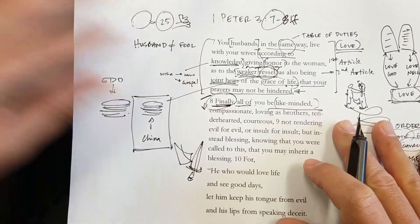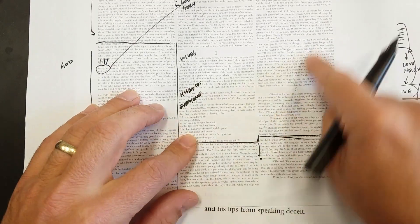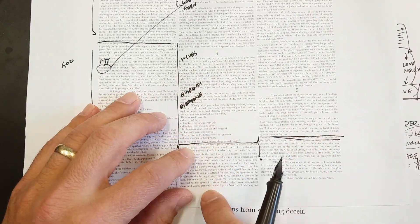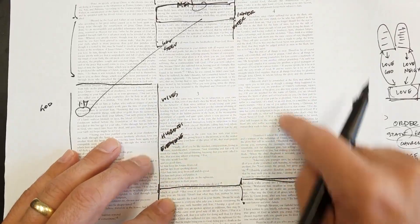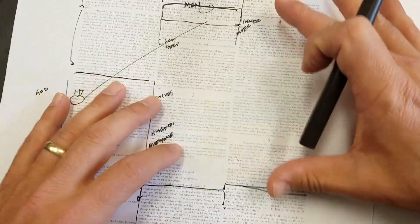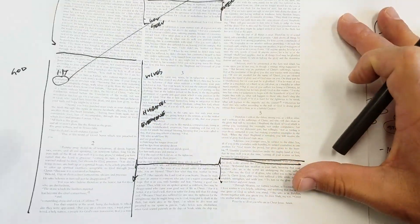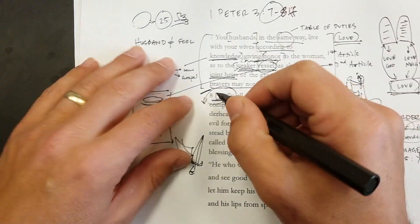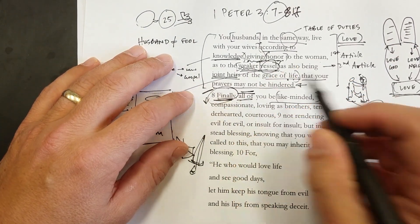This is not finally for the book. Remember, we got a lot to go. And, in fact, at verse 13, we're really going to pick up on what it means to suffer, that long section of suffering. So this finally is the finally for the table of duties. Finally, all of you.